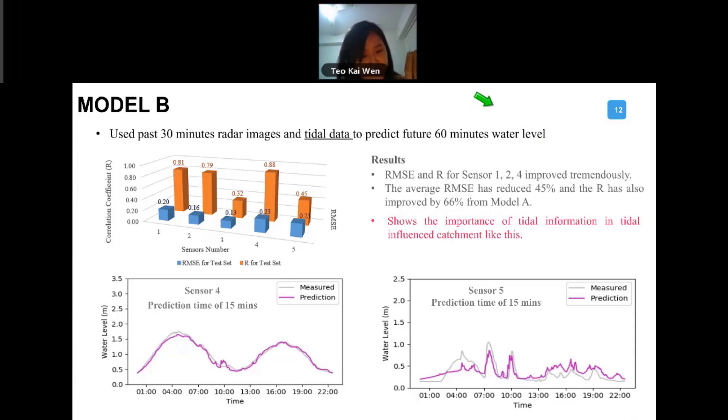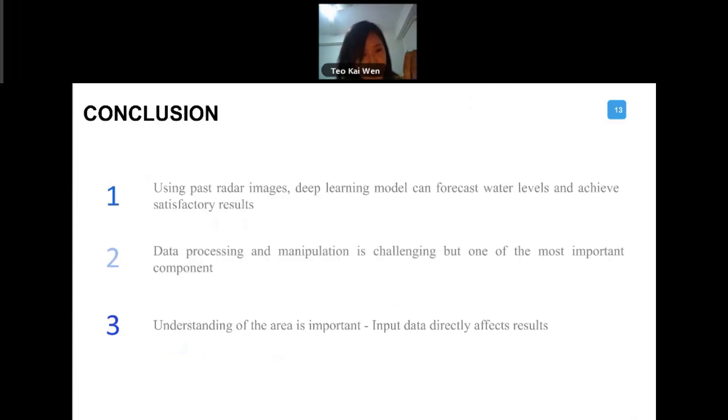Very quickly, conclude. The conclusion here is that using past radar images, the deep learning models can actually forecast water levels and achieve satisfactory results. Here the challenge that I had was more on data processing and manipulation - very challenging, but it is also one of the most important components that we should always emphasize on. Lastly, from the information that I shared with you, understanding the area is actually very important. Sometimes there are some parameters that you miss out that would significantly affect your results. Yeah, so that is all I have actually.